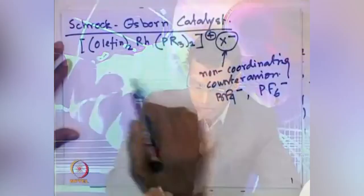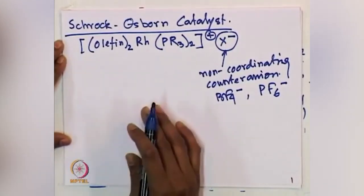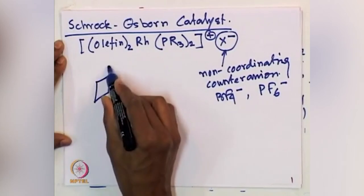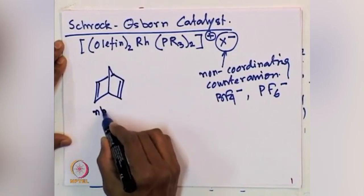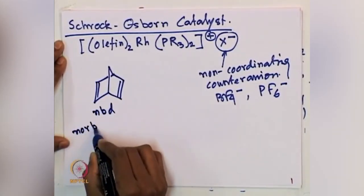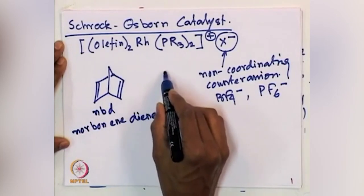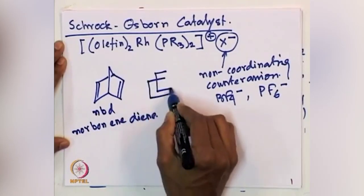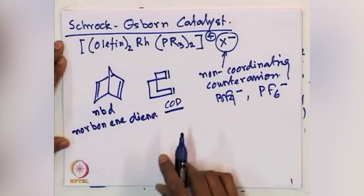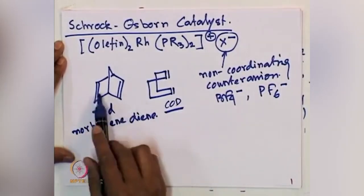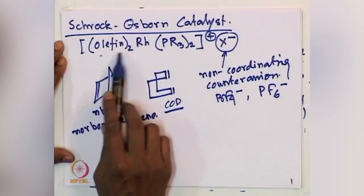Returning to the Schrock-Osborne catalyst: the two olefins in the starting material can be provided by a single substrate with two olefinic partners. For example, norbornadiene or cyclooctadiene (COD) — both are diolefinic ligands that coordinate to the metal center, as represented by the general formula of two olefins.